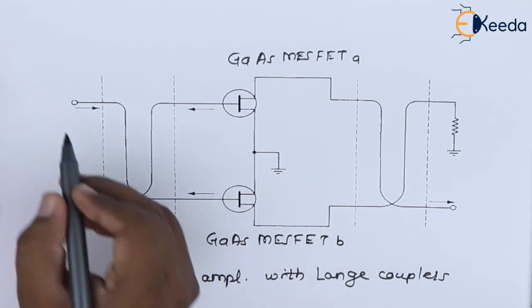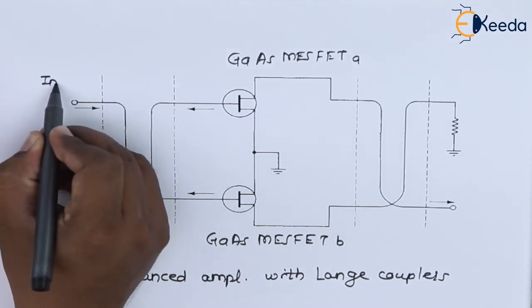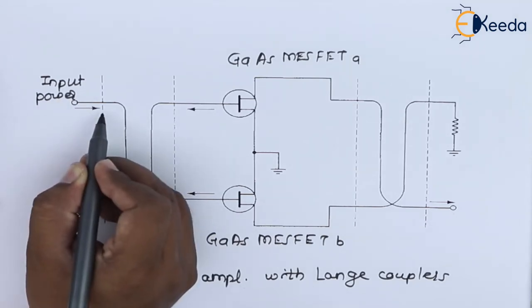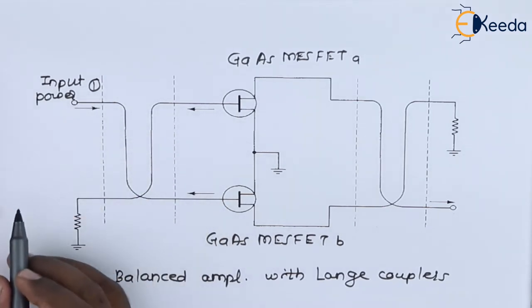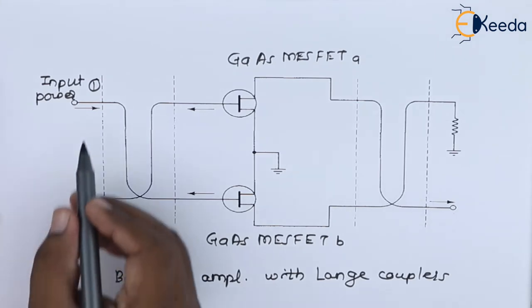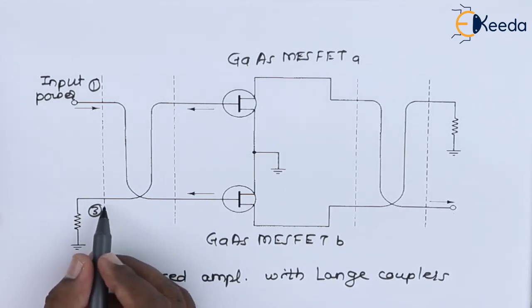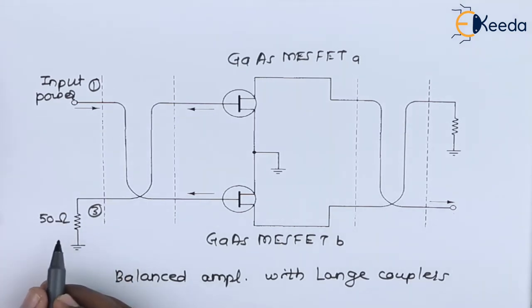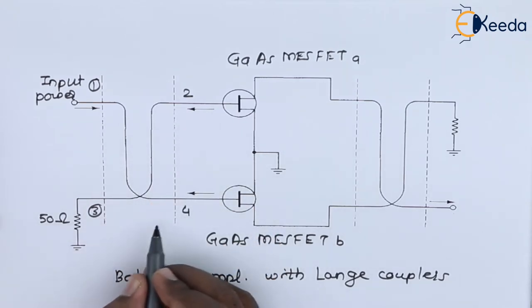This particular node can be treated as the input port, where we provide input power. The port number can be regarded as port number one. At the bottom end we have port number three, which is terminated with the load impedance — a pure resistance of 50 ohms — as shown in the schematic diagram. Port number two and port number four are also identified.